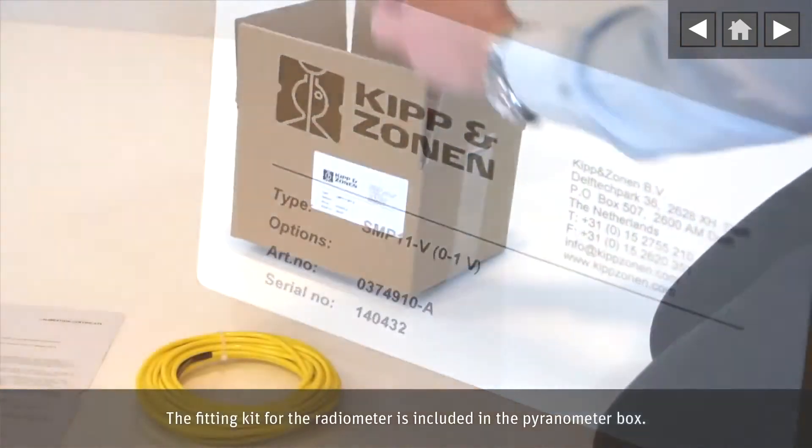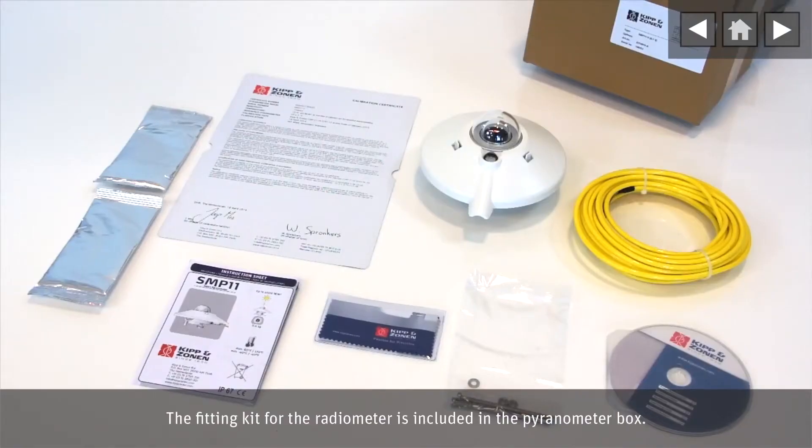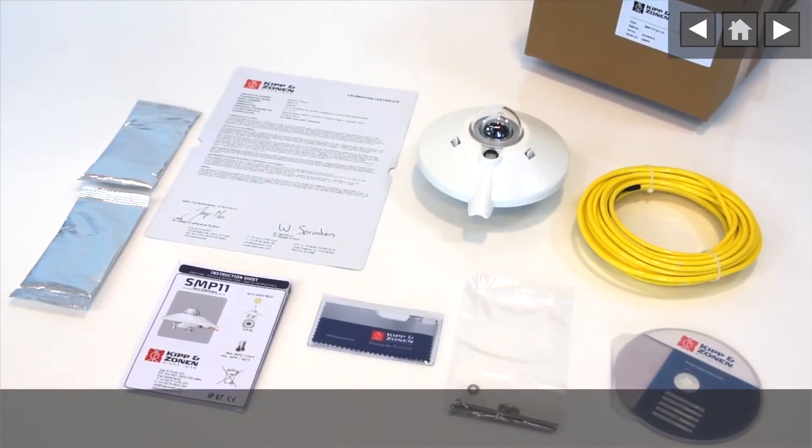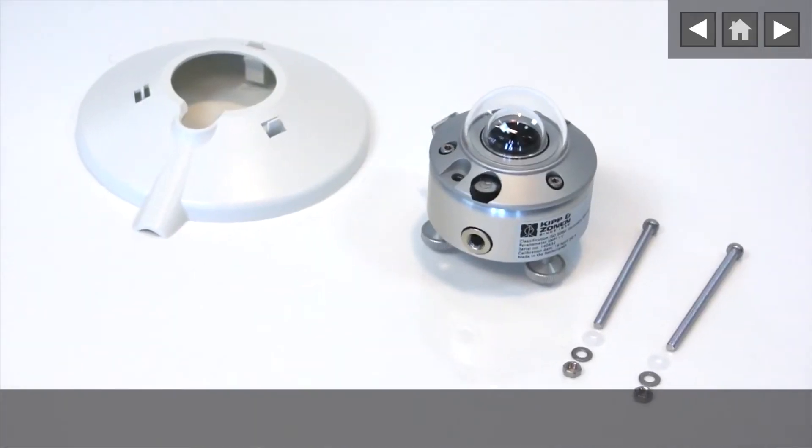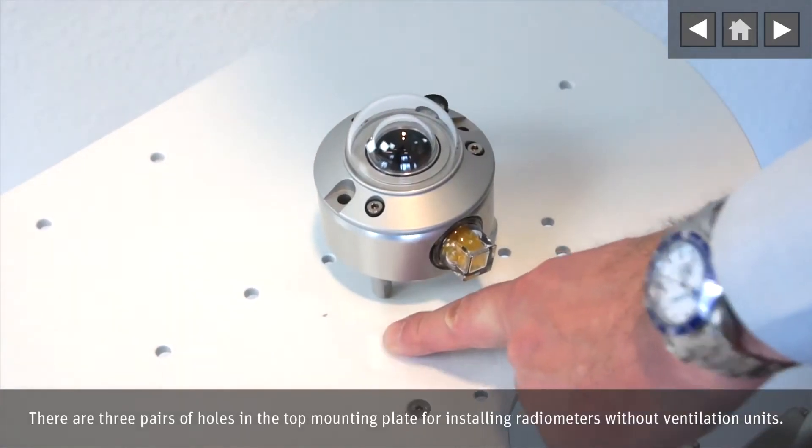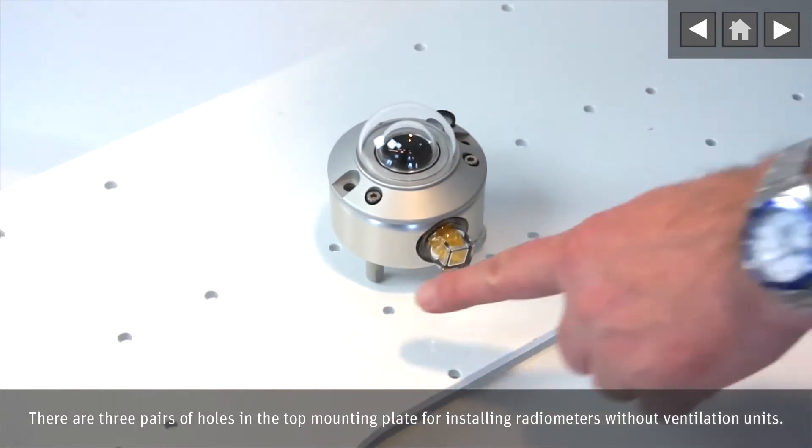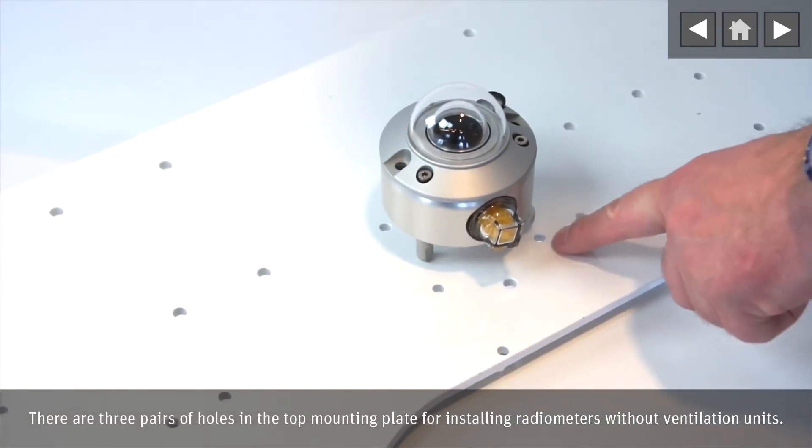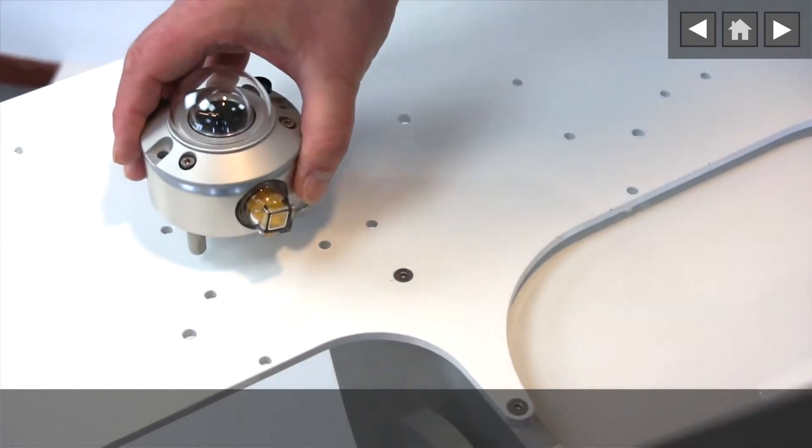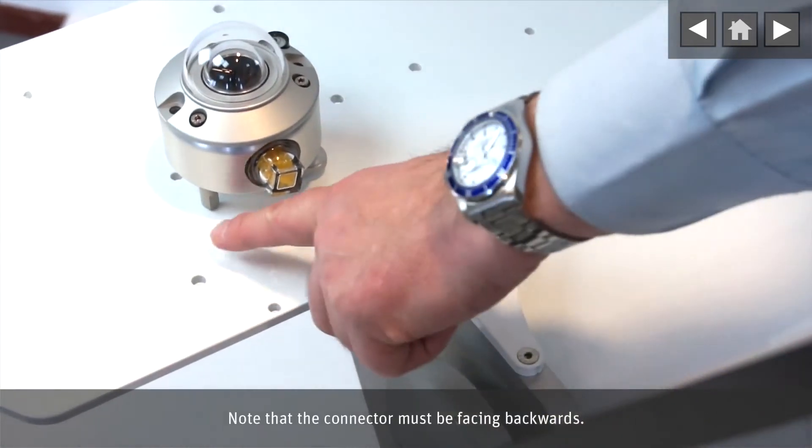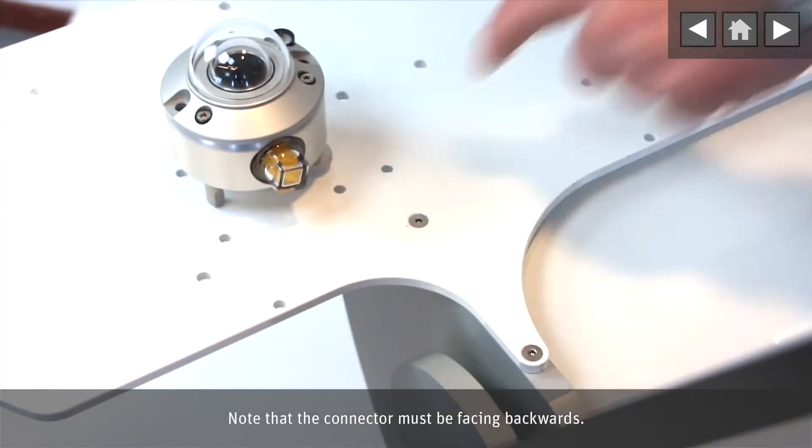The fitting kit for the radiometer is included in the paranometer box. There are three pairs of holes in the top mounting plate for installing radiometers without ventilation units. Note that the connector must be facing backwards.